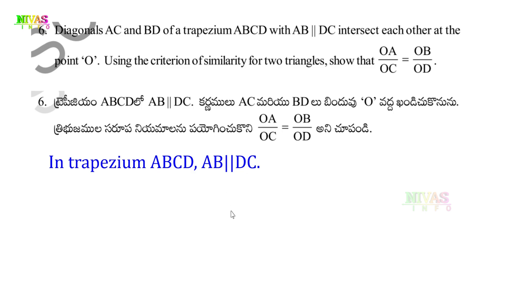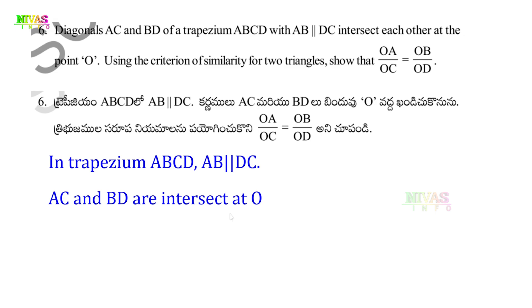If you have diagonals AC and BD, they intersect at point O. So if they are intersected, you have a point that is O. We need to prove OA by OC is equal to OB by OD.